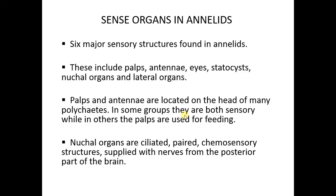Sense organs: the annelids have six main sense organs, which include the palp, the antenna, the eye, the statocysts, the nuchal organ, and the lateral organs. Please take note of these sense organs in the annelids.